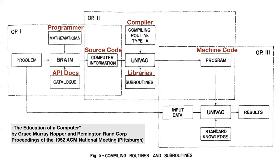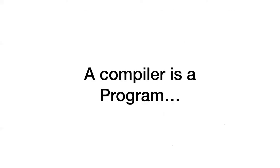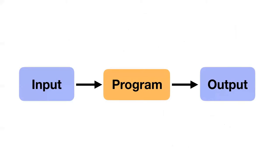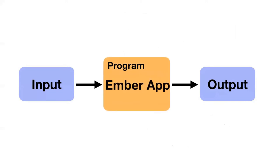That's where the word begins and where the concept begins. A compiler is a program, and I want to focus on the fact that all programs have input and output. We don't always think about them in these simple terms, especially when we're working on a web application. Your Ember app is a program — so what is its input and output?